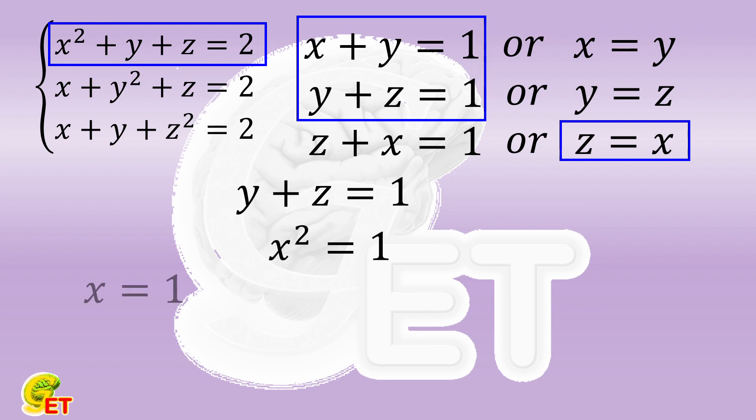If x equals 1, z equals x, so also equals 1. y equals 1 minus z, so equals 0. If x equals minus 1, z equals minus 1, and y equals 2.